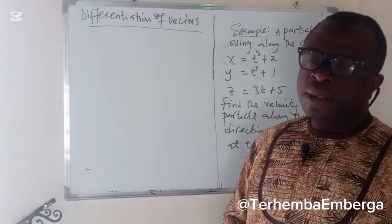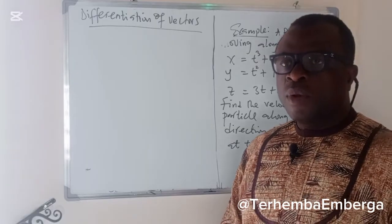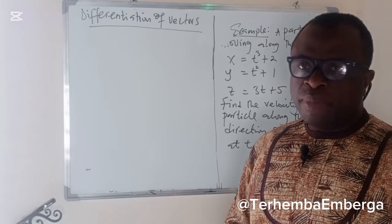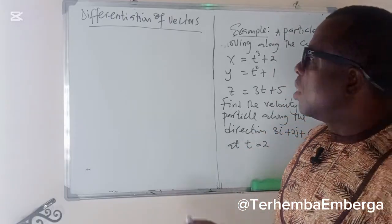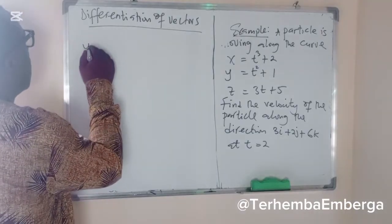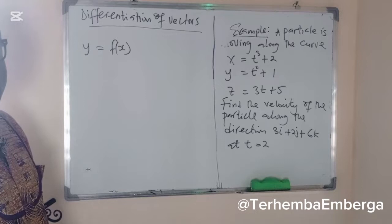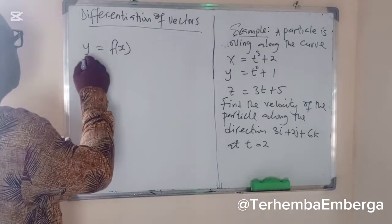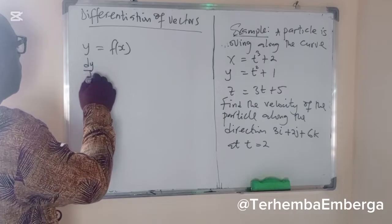Differentiation simply means the derivative of a function with respect to an independent variable. For example, if you have something like y equal to f of x, it means that the derivative of this becomes dy/dx.